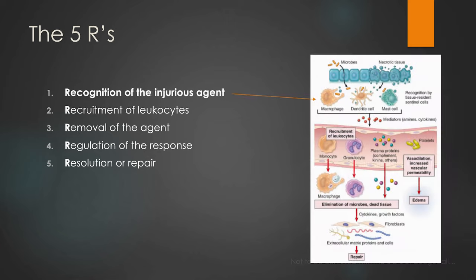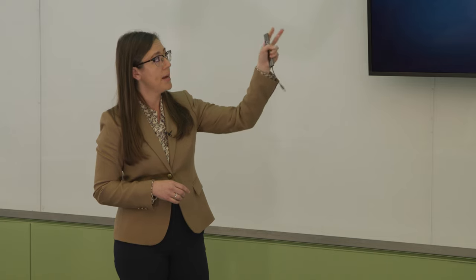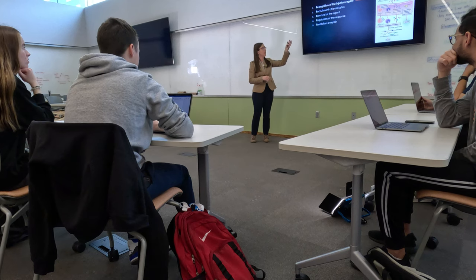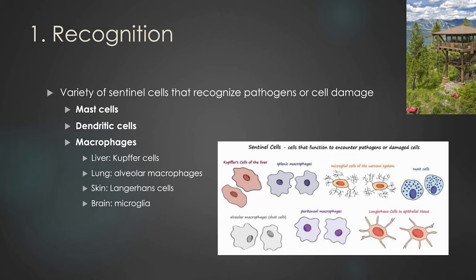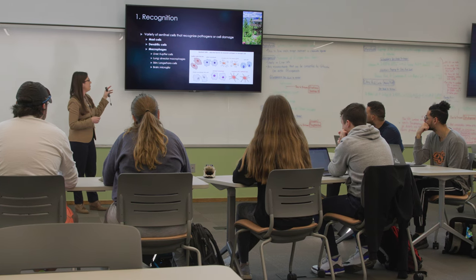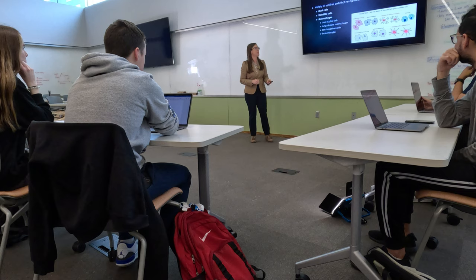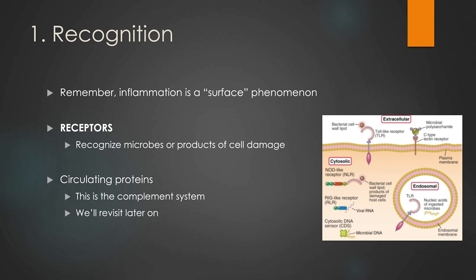This diagram gives a nice broad overview of all five R's. The injurious agent could be a microbe like bacteria, but it might also be directly damaged or necrotic tissue — for example, a burn or sunburn. That's going to tell cells we need to react. I've got a variety of sentinel cells that recognize either injury or pathogens like bacteria and viruses — think of them as sitting in a watchtower surveying the land. My big sentinel cells are mast cells, dendritic cells, and macrophages.